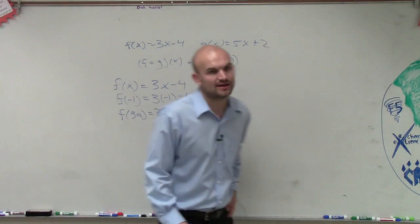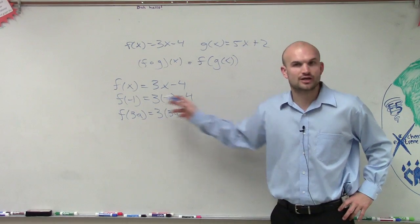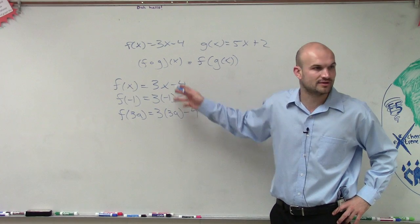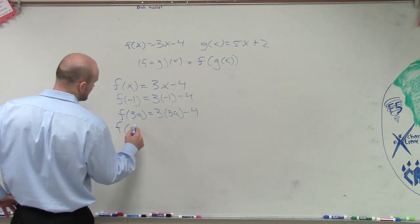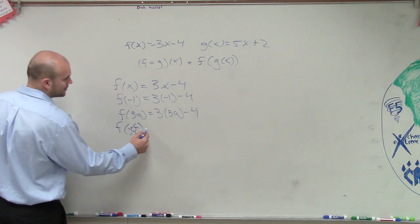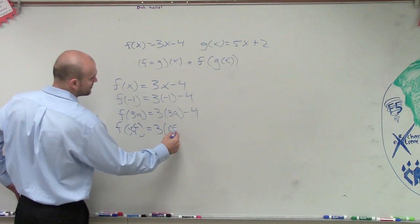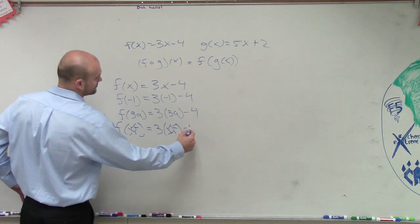It's almost like a pattern. No matter what I put in these little parentheses, you're going to plug in for your input variable. In this case, it's an x. So if I put f of a sun, you're going to put a sun in for there, right?